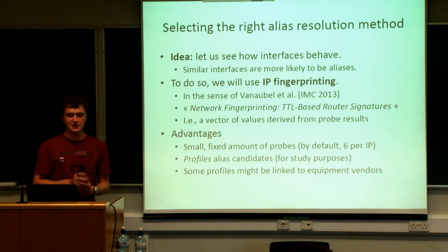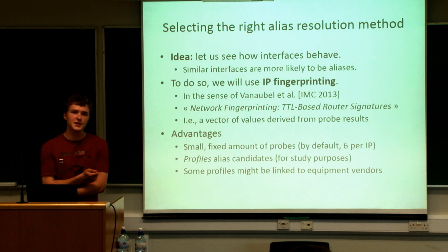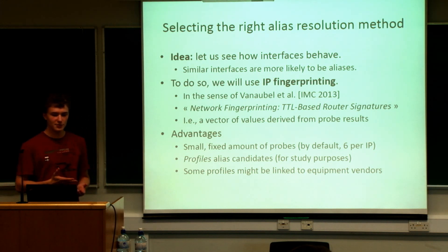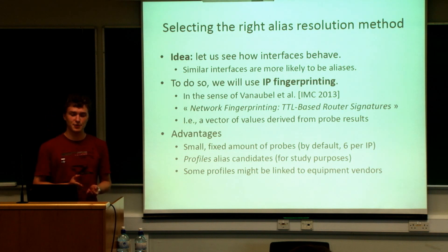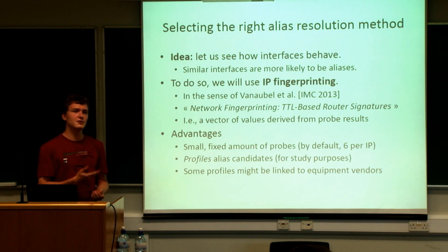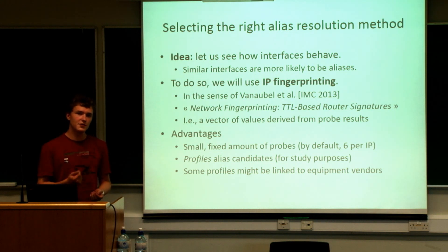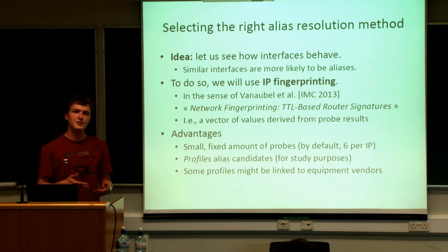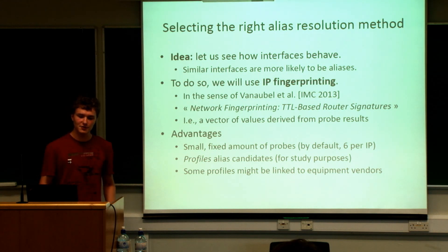The advantage of this approach is that we can use a small and fixed amount of probes per interface — in the whole methodology, we use only six probes per IP, which is quite economical. It also profiles alias candidates, making it interesting both for alias resolution and for studying how router interfaces on the internet generally behave.